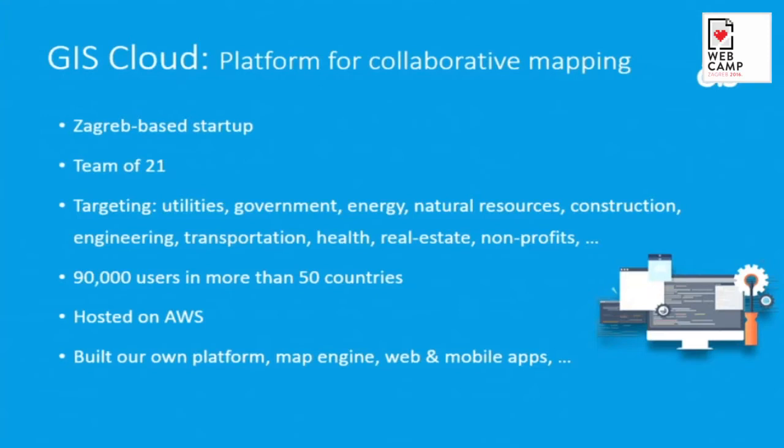So GIS Cloud, we are a platform for collaborative mapping. We enable organizations to collaborate around spatial data in various industries from utilities, energy, health, et cetera, to make those workflows more efficient in the cloud. We are running that as a service, as software and platform as a service with a platform that we built and we are hosting it on Amazon. So we build REST APIs and Map Engine and various web and mobile products that we then offer to our clients worldwide.